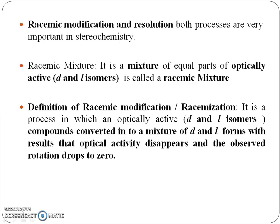So first of all, what is meant by racemic modification and racemic mixture? It is a mixture of equal amounts of, or equal parts of, optically active D and L isomers, and is called a racemic mixture.